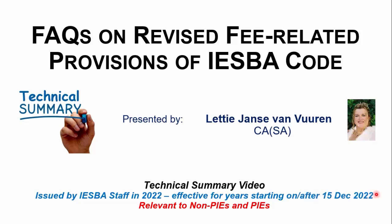The first December year-end will be December 2023, and the first February one will be February 2024. This is relevant and very important to both non-PIEs and PIEs — that's public interest entities.